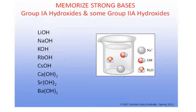As far as the strong bases go, the Group 1A hydroxides and some of the Group 2A hydroxides behave as strong bases when placed in water. The Group 1A strong bases are lithium hydroxide, sodium hydroxide, potassium hydroxide, rubidium hydroxide, and cesium hydroxide. You can memorize those using a periodic table — those are the Group 1A metals.